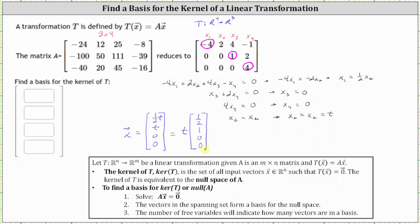So now we have the information we need. The vectors in the spanning set form a basis for the null space, as well as the kernel of T. Notice we have one vector in the spanning set. And therefore, any scalar multiple of the vector one half, one, zero, zero, would be a basis for the kernel of T.